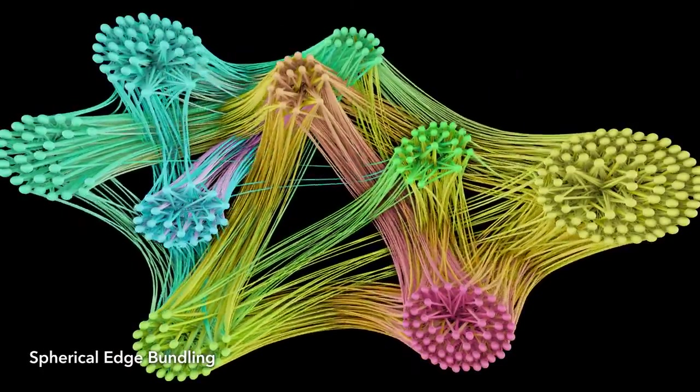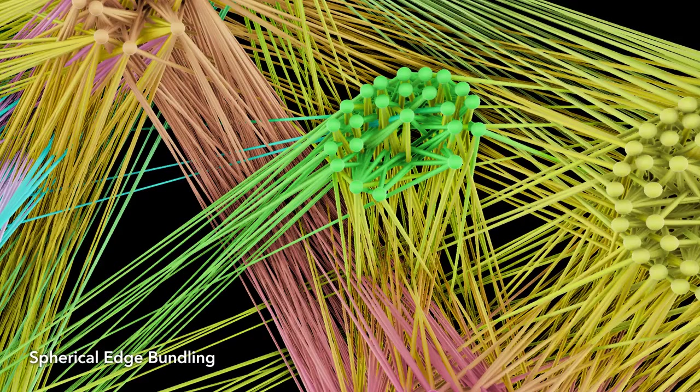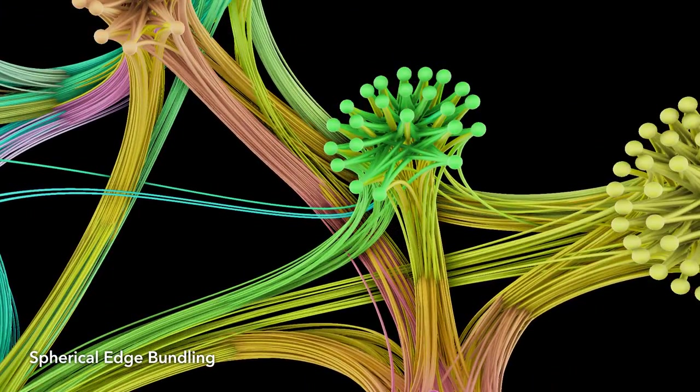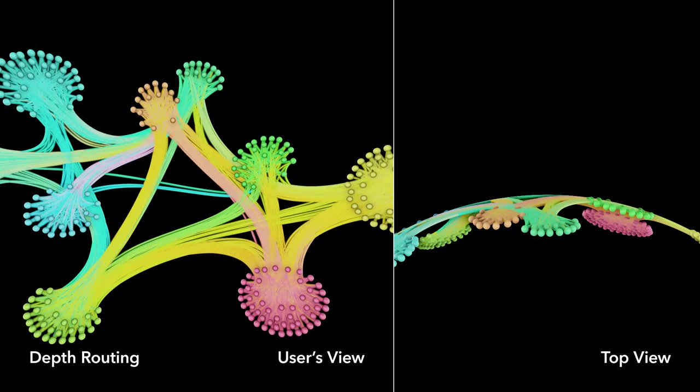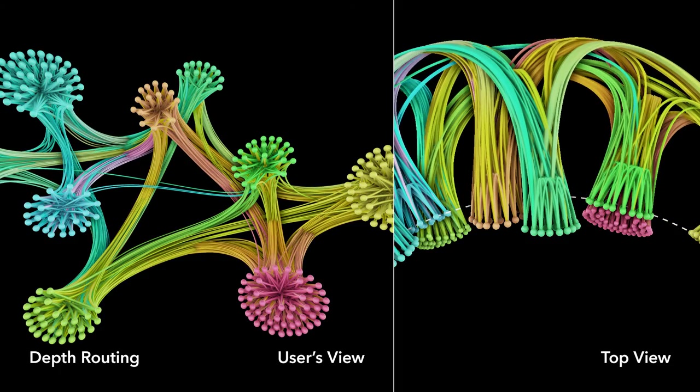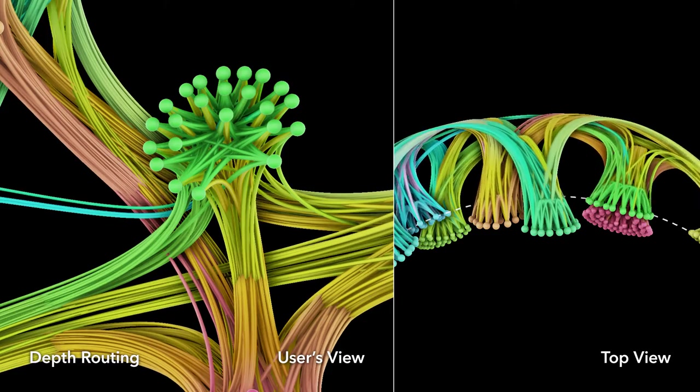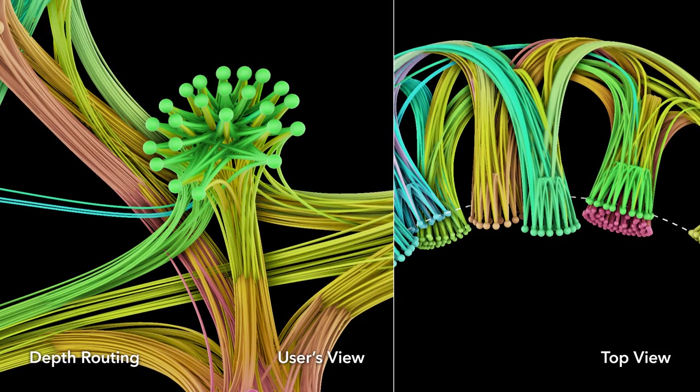Similar to 2D edge bundling, using spherical splines to bundle edges around the sphere improves the legibility of the graph. In addition, we modulate the depth of the edge bundles by routing them away from the sphere, according to the clustering hierarchy, in order to take advantage of stereoscopy.